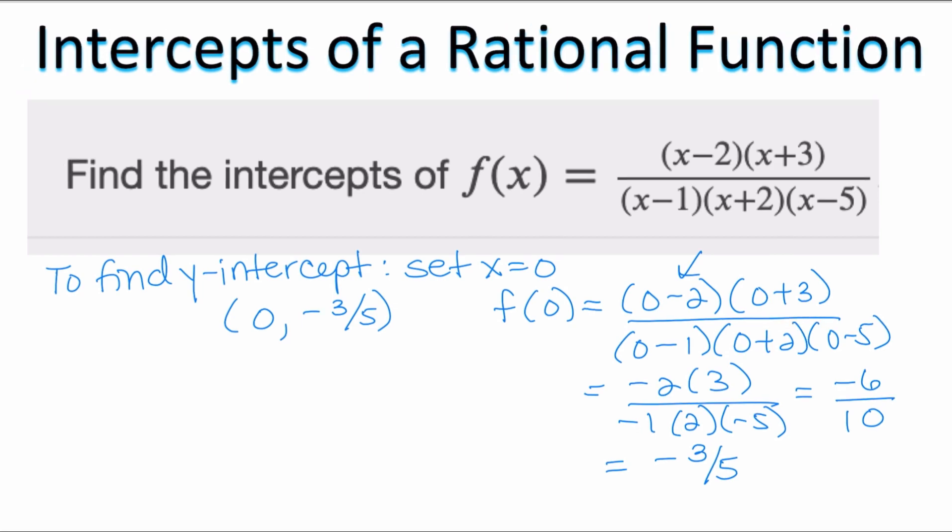When you go to find the x-intercept of a rational function, you have to remember that in a fraction, division by 0 is mathematically impossible. So the denominator is going to be responsible for telling us what the vertical asymptotes are. So clearly right here I'm going to have three vertical asymptotes and these vertical asymptotes are going to be x equals 1, x equals negative 2, and x equals 5 because that is what's going to make my denominator equal to 0.